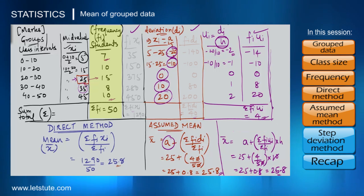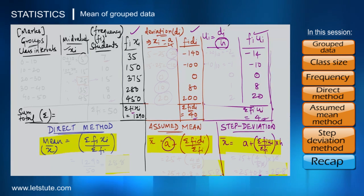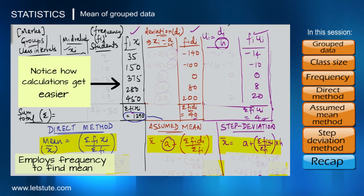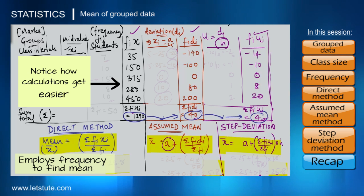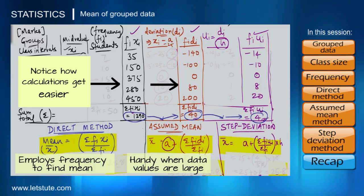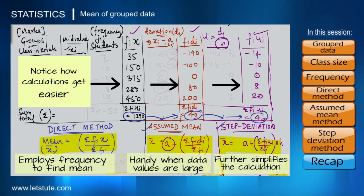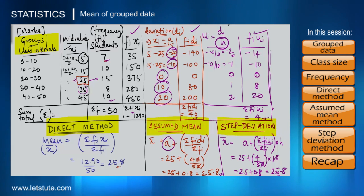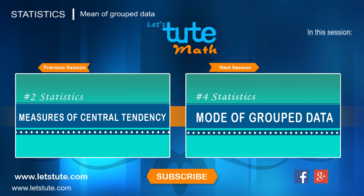Since we take a step ahead of the assumed mean by using deviations divided by h, this is called the step deviation method. With each successive method, the calculations become easier: sigma fi×xi was 1290 in the direct method, sigma fi×di was 40 in the assumed mean method, and sigma fi×ui is just 4 in the step deviation method. These latter methods are especially helpful when data values are large. In summary, for a large data set grouped into classes, we can find the mean by three methods: direct method, assumed mean method, and step deviation method — all giving the same answer. In the next session, we will see how to find the mode of grouped data.